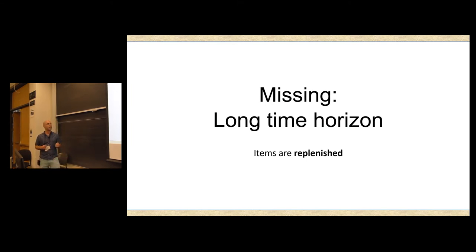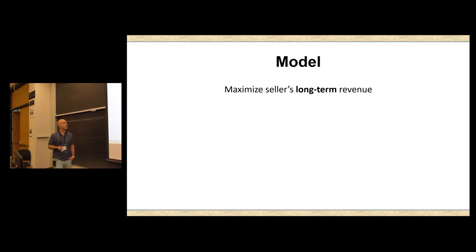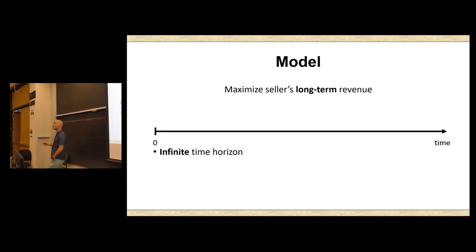So back to prophet inequalities. Over a long time horizon, you expect items to be replenished. You also expect items to perish. So this delicious green apple, if I wait long enough, will no longer be delicious. So here's our model to kind of address this problem. We want to maximize the seller's long-term revenue over an infinite time horizon. And now the items are not given up front, but they're produced over time.